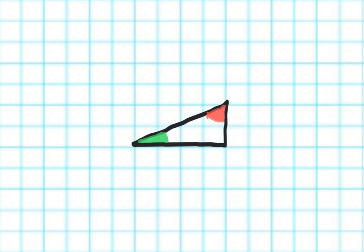We're going to start by looking at this right triangle — this slope triangle. I've color coded it because I want us to understand that the green angle plus the red angle, these two angles combined, equals a 90 degree angle. We can prove it by folding the right triangle on itself — you'll notice that the green and the red angles can come together to perfectly fill in this 90 degree angle. So we want to recognize that green plus red equals 90.